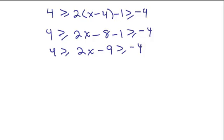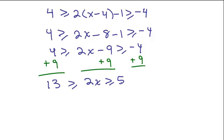So now we need to isolate the x. So I'll add 9 to both sides to get started. And it's all 3 parts. So we've got 13 greater than or equal to 2x. It's greater or equal to 5. And then just go ahead and divide by the coefficient of 2 for 2x. If I divide everything by 2, I have 13 halves. I'm going to write that as 6 and a half. 6 and a half is greater than or equal to x, is greater than or equal to 5 halves. What's that? 2 and a half.